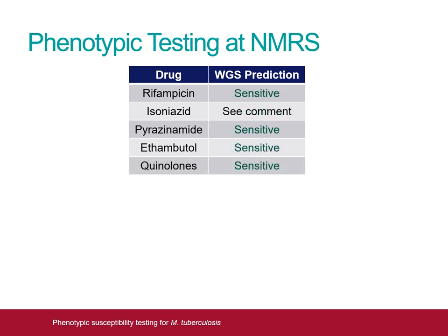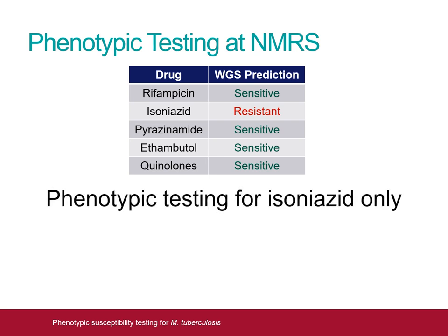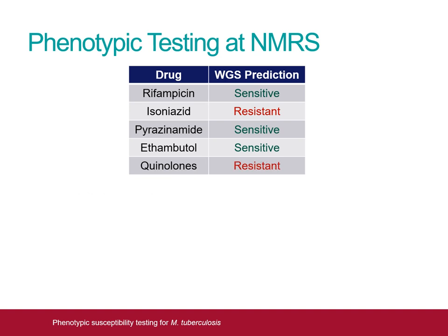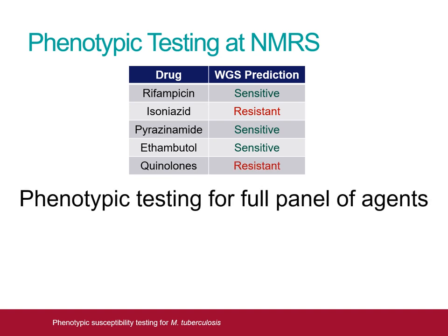Given the predictive value of isoniazid sensitivity, extra care is taken with isolates that are not predicted to be isoniazid sensitive by WGS. In such cases, if the isolate is predicted to be sensitive to the remaining first line drugs and to fluoroquinolones, phenotypic testing will be performed for isoniazid only. However, if any of these other agents are predicted to be resistant, a full panel of phenotypic susceptibility testing will be performed. This full panel testing will also be performed should any of these agents have an uncharacterised mutation, or if WGS fails to generate a satisfactory sequence for them.